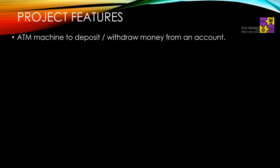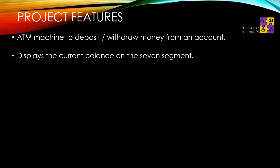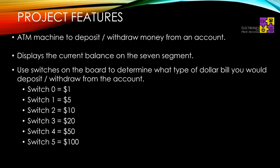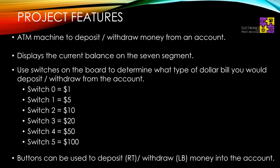This is going to be an ATM machine implemented on the Basys board. It will be capable of depositing and withdrawing money from an account, just like any conventional ATM machine. It's also going to display the current balance on the seven-segment display. We are going to use six switches to input a dollar amount — one dollar, five dollar, twenty dollar, fifty dollar, and one hundred dollars — which determines what type of dollar bill you deposit or withdraw.